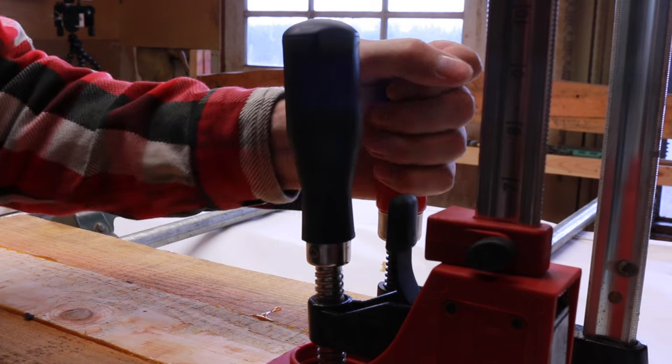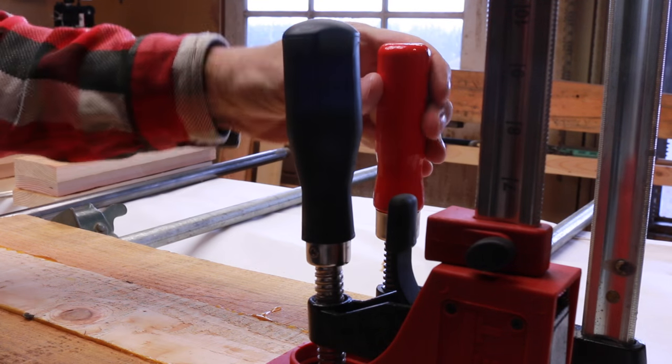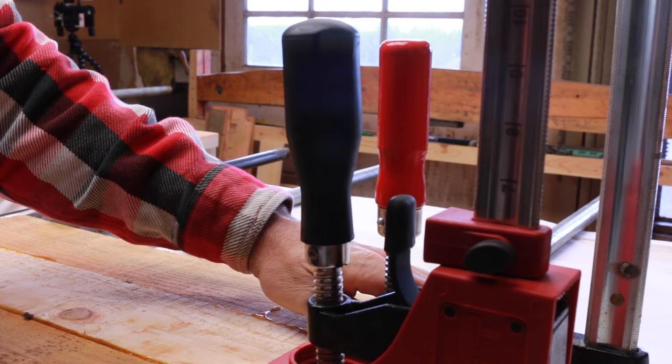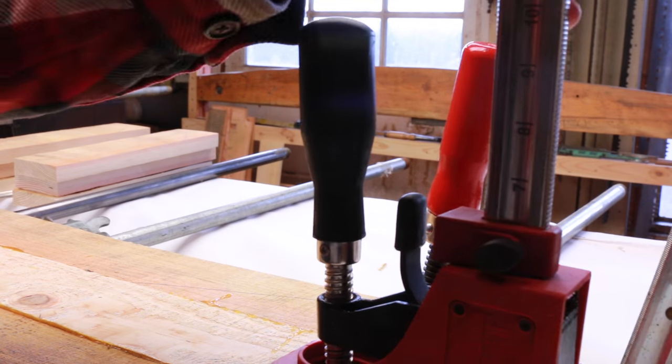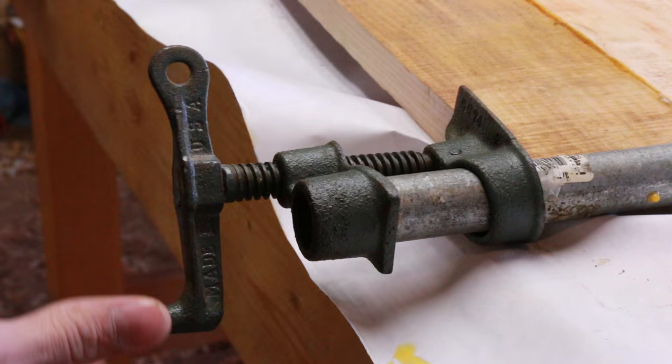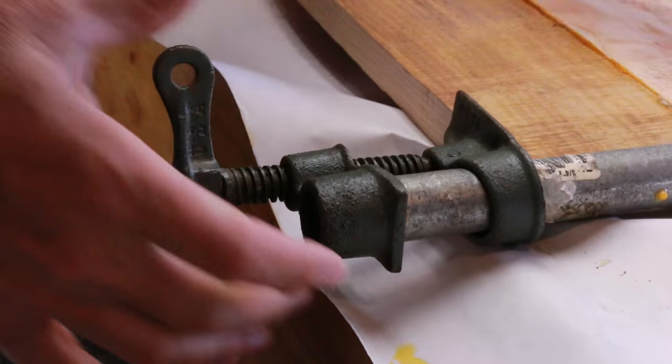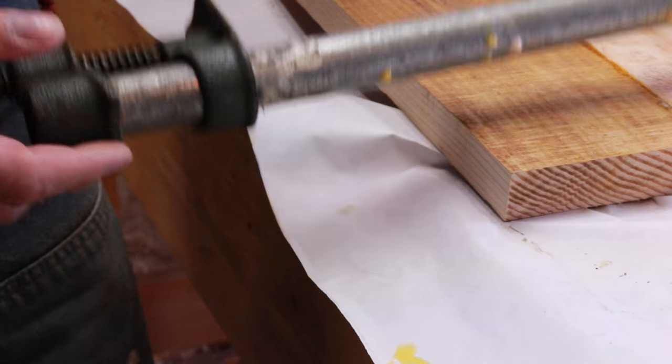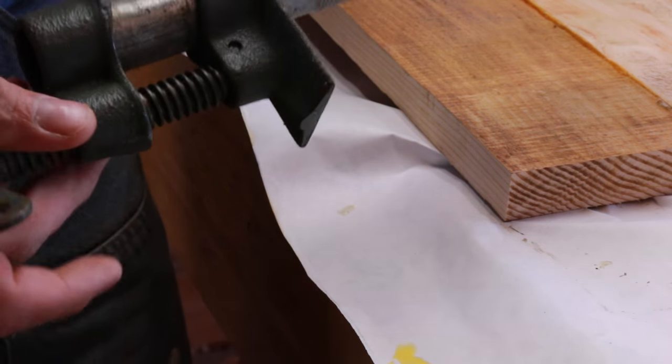A couple of you asked about those big orange ones. Where did I get those? Those are made by Jorgensen, Scandinavian company. And they're really great clamps. And these green ones here are very clever indeed because you just use them on a piece of pipe. They're a pretty affordable way to go.